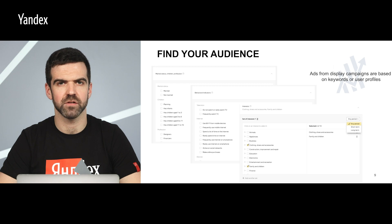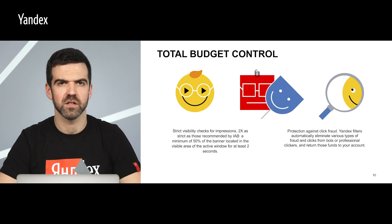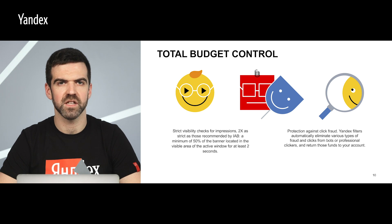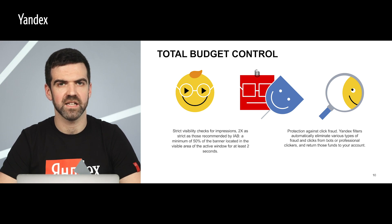You can show different banners to users in different segments. Advertising with Yandex, you only pay for real impressions. An impression is considered valid only if at least 50% of the banner is located in the visible area of the screen for at least 2 seconds. This makes Yandex's visibility standards twice as strict as those of the Interactive Advertising Bureau. Moreover, Yandex's strict anti-fraud protection protects your budget from bots and fake clicks.